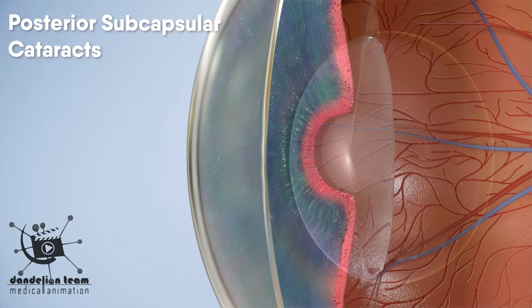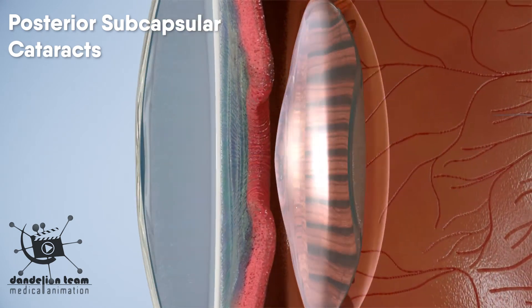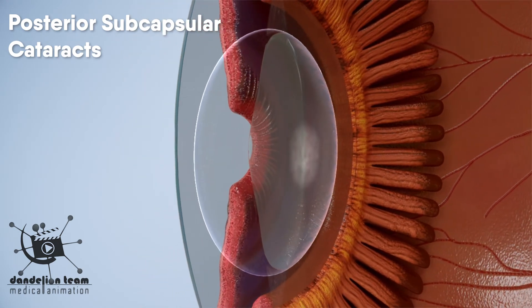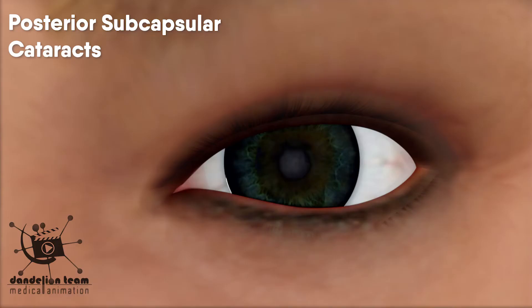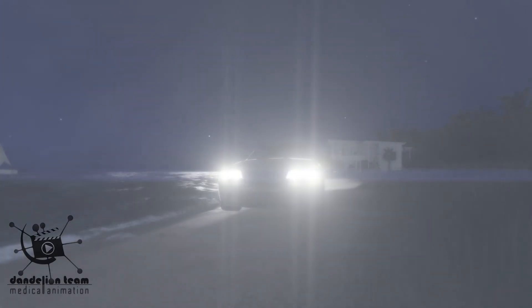Posterior subcapsular cataracts affect the back of the lens, starting as a small opaque area that usually forms near the back of the lens, right in the path of light. A posterior subcapsular cataract often interferes with your reading vision, reduces your vision in bright light, and causes glare or halos around lights at night.